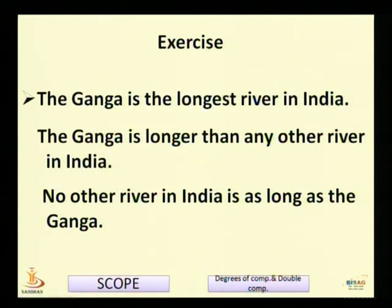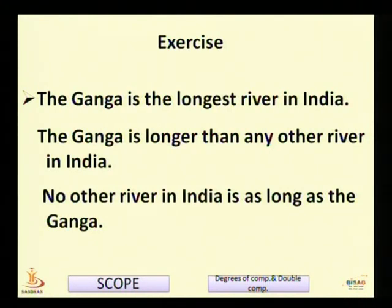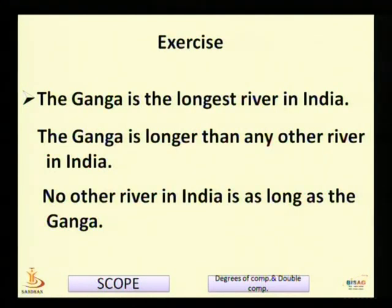One more example: 'The Ganga is the longest river in India' — here the noun is in singular. Changed to comparative: 'The Ganga is longer than any other river in India.' Changed to positive: 'No other river in India is as long as the Ganga.' For the 'one of the' type — 'The Ganga is one of the longest rivers in India' — it becomes 'The Ganga is longer than many other rivers in India' and 'Very few rivers in India are as long as the Ganga.'